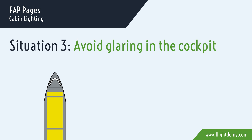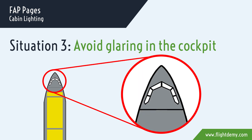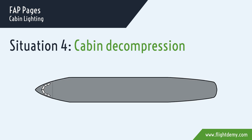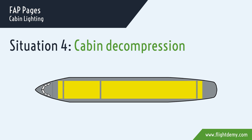Situation three: avoid glaring in the cockpit. When at least one of the engines is running and the cockpit door is open, the light intensity in the forward entrance area will be dimmed to avoid glaring the pilots in the cockpit. Situation four: cabin decompression. In case of low cabin pressure, all cabin lights are switched on with full brightness, independent from any selected light intensity setting.